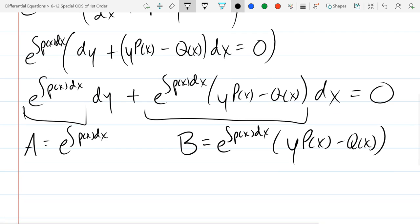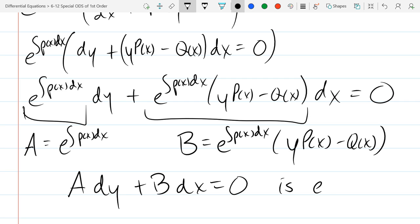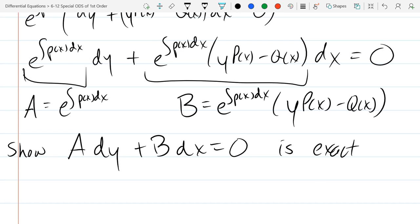And B is going to be this mess right here. What do we need to do to show that A dy plus B dx equals 0 is exact? That's exactly right, we take the partial derivative, the opposite letter that you see next to it.